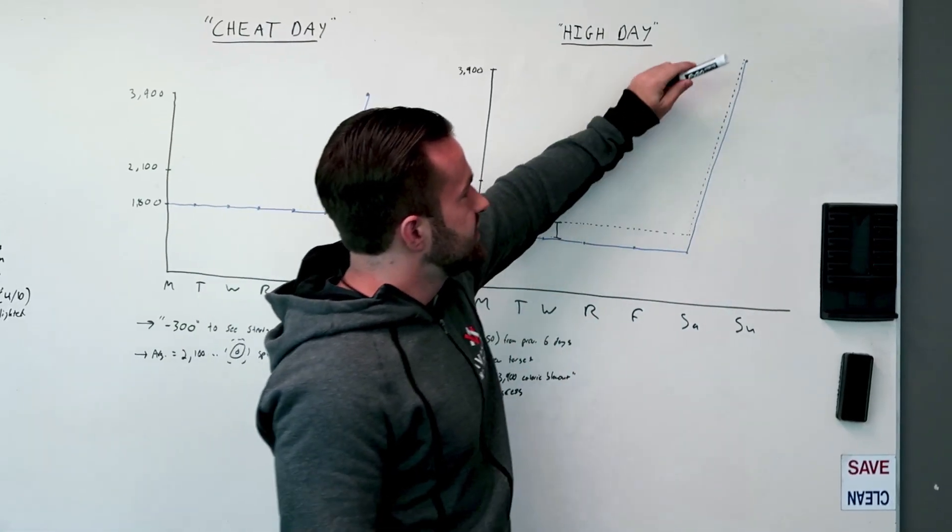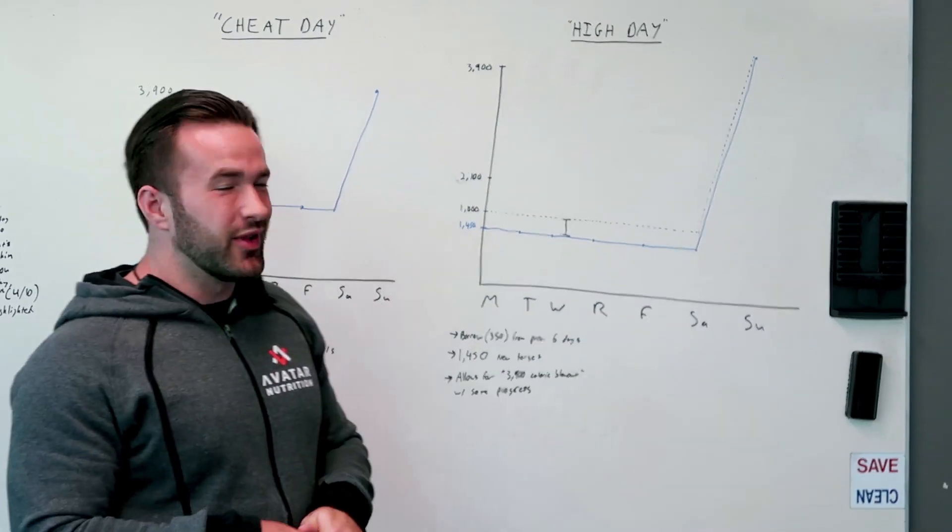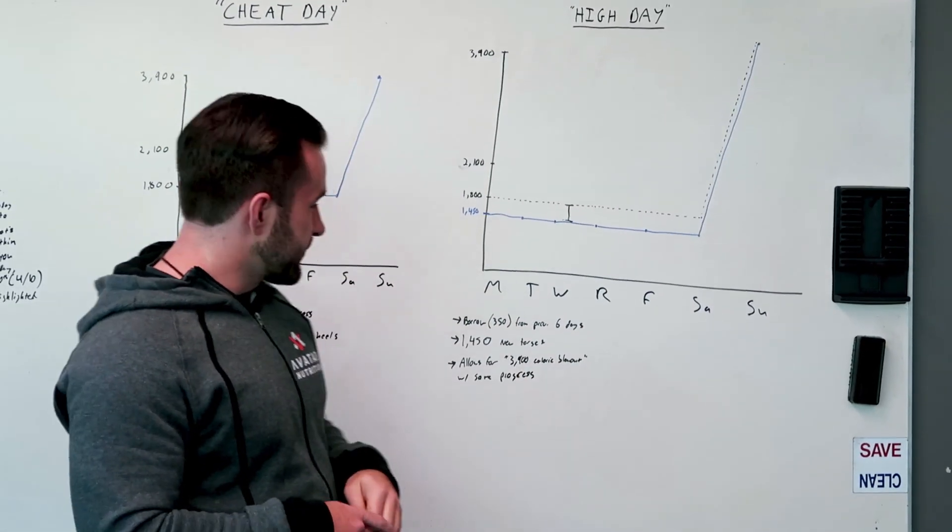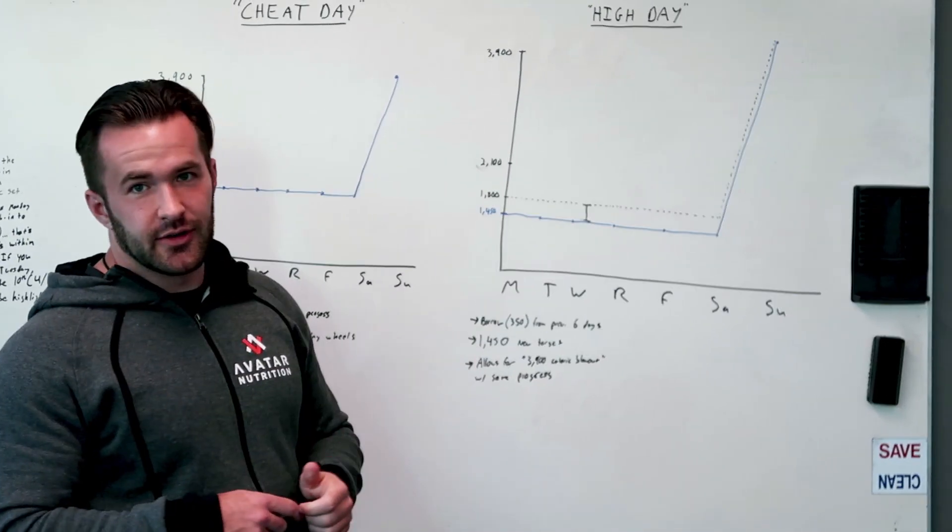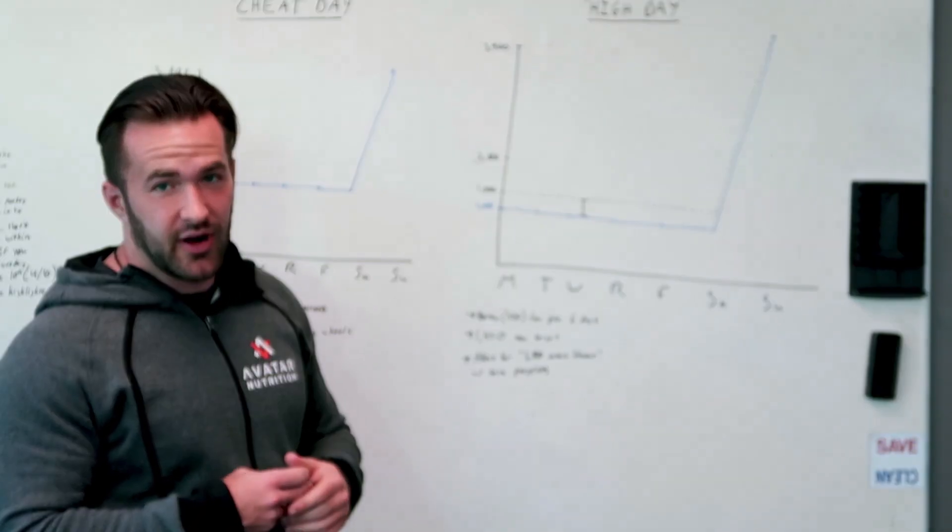Same thing happens. Golden Corral, 3,900 calorie blowout, but on average, you are 300 under throughout the week, seeing exactly what you need to see in terms of progress.